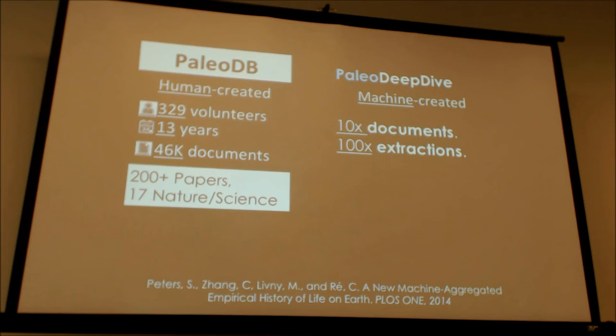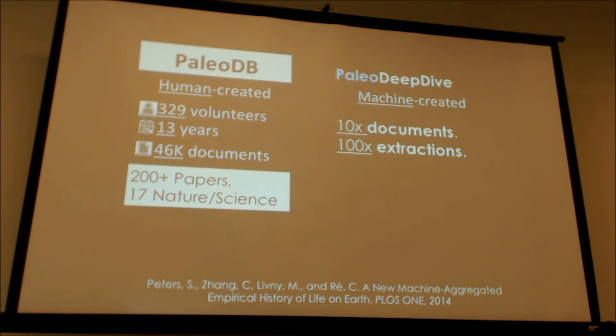In that 10x more documents, we got 100-fold more extractions — meaning per document, we're getting an order of magnitude more information than humans are actually able to extract. When you go back and do the error analysis the answer is obvious: people get bored. You don't want to annotate all the tables in the appendix of some document. If you're the world expert in snails and there are facts about whales, you get the snail stuff and mark it done. A machine systematically goes through and gets as many occurrences as possible.